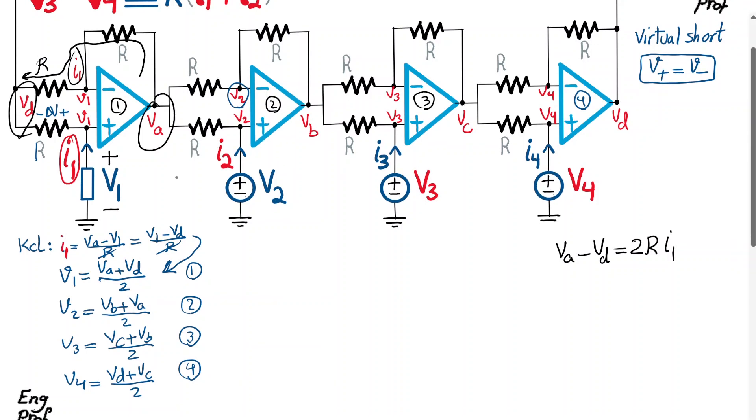I can do the same thing for second stage. So for second stage, I can write VB minus VA should be equal to R plus R times I2. So that would be VB minus VA is equal to two R times I2.